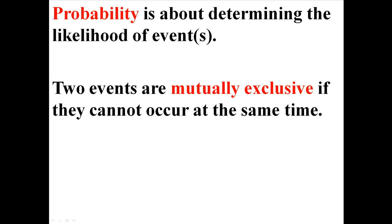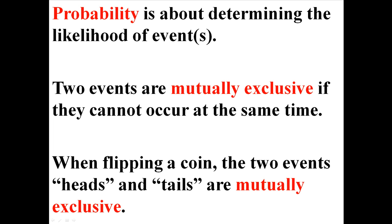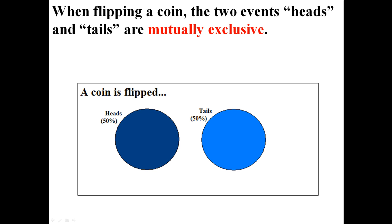Two events are mutually exclusive if they cannot occur at the same time. For example, when you flip a coin, the two events — heads and tails — are mutually exclusive, because you can only get heads or you can only get tails. You can't get both of them. We can actually show that in a little Venn diagram here. There's a 50% chance of getting heads and a 50% chance of getting tails, and there's no way that both of these events can occur at the same time, which is why they're mutually exclusive.